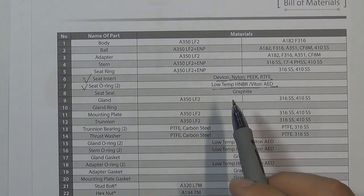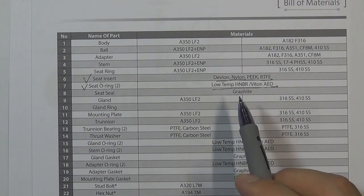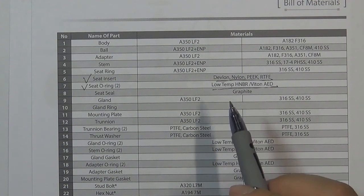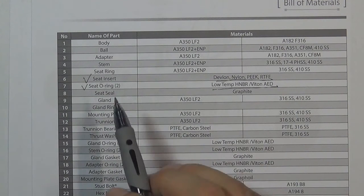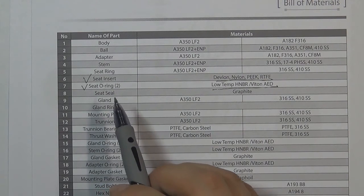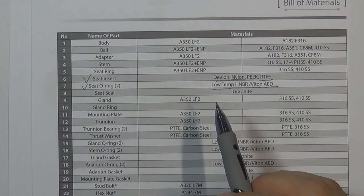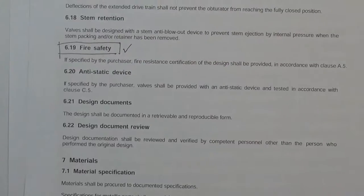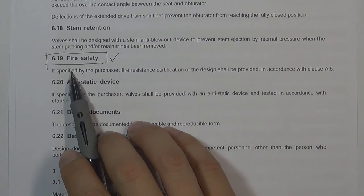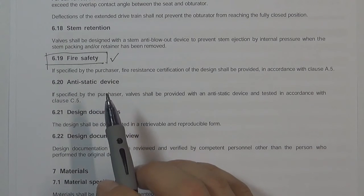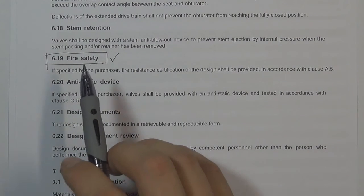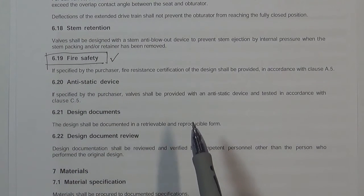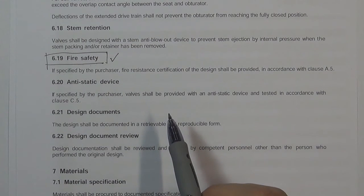The reason we use soft materials in API 6D valves is that in petroleum and natural gas flow control systems, temperatures are generally not high. We don't need metal to make the valve seat, because metal seats make it very difficult to achieve complete sealing — zero leakage is very difficult to achieve with a metal seat. However, this causes a problem: if a fire occurs, the soft seat will be destroyed and the valve will leak. Therefore, API 6D requires the valve to have a fire safety function.